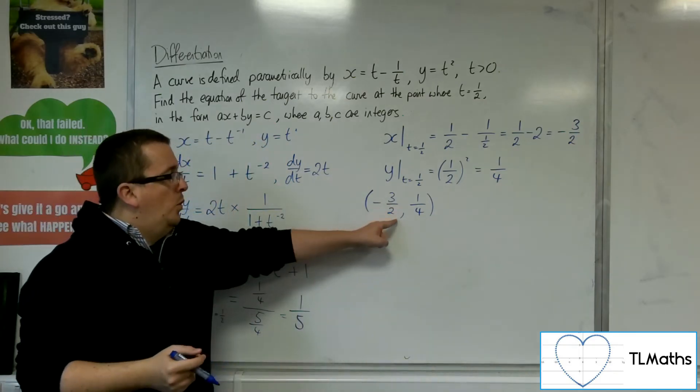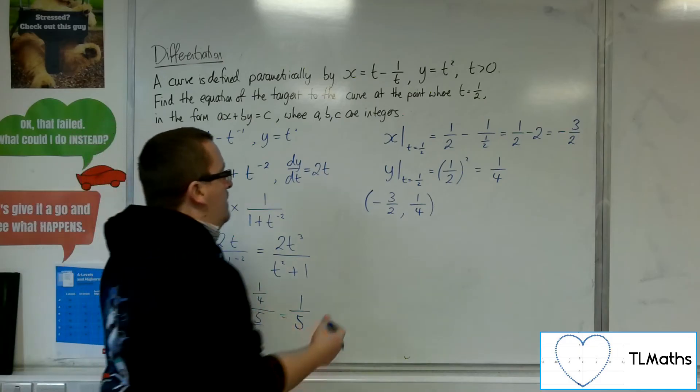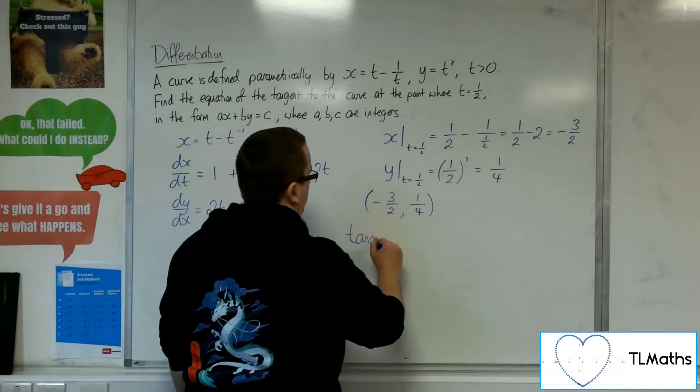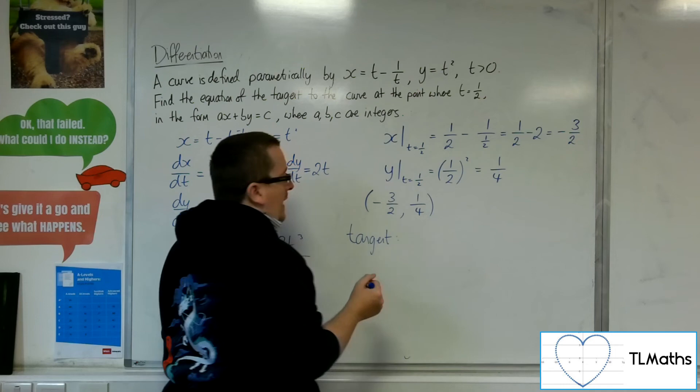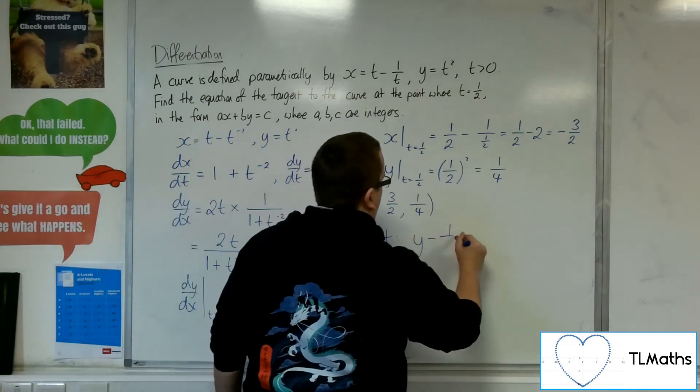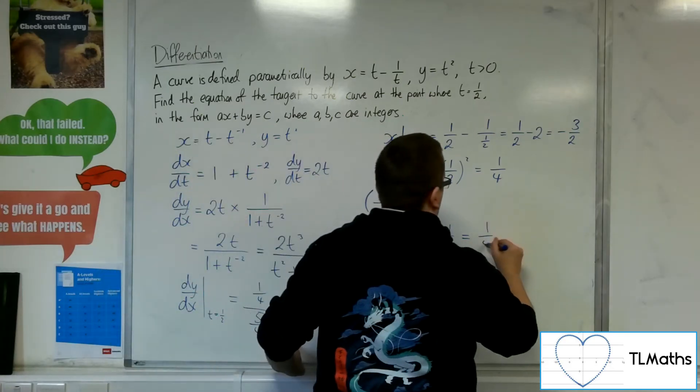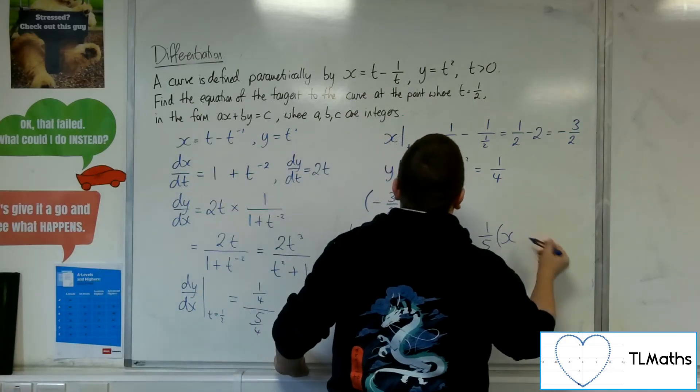So, I now have the coordinates and I've got the gradient. So, I can use y minus y1 equals m times x minus x1.